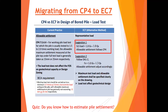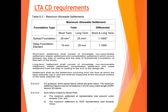Estimating pile settlement is a whole separate topic requiring another hour-plus to cover. LTA CDC requirements are interesting — they distinguish between short-term and long-term settlement for deep foundation elements: 15 mm and 25 mm respectively. They also impose an SLS failure criterion: at 1.5 times the representative load (currently called the characteristic load), settlement cannot exceed 14 mm, and at the second cycle cannot exceed 7 mm.